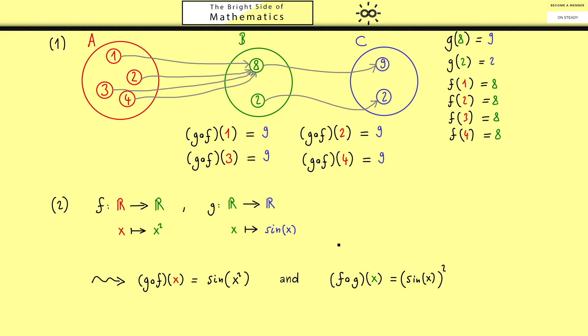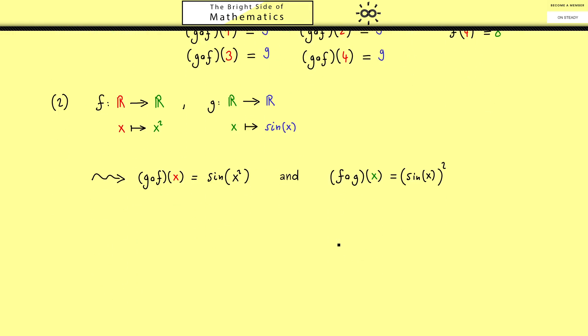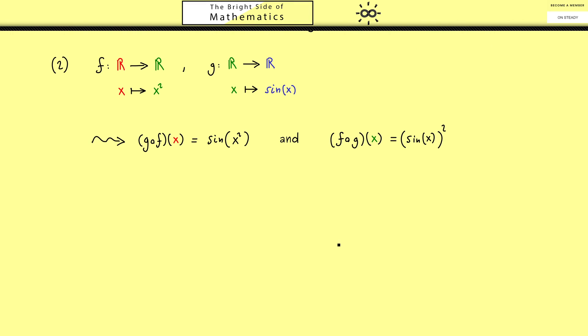Okay, now with the knowledge of composition we can finally explain why we have the term inverse map. However, first I want to talk about a very particular map that we can define for any set A. It's called the identity map and we write id and put the set A in the index.